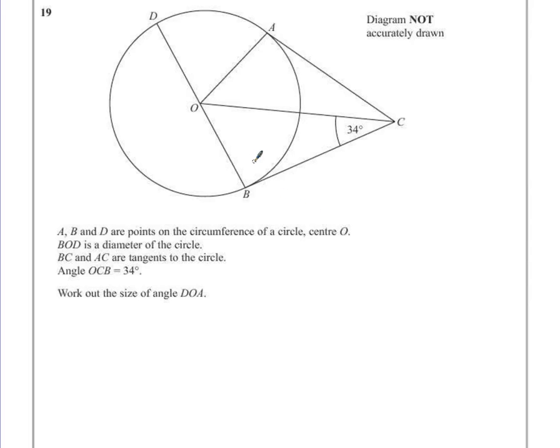The first theorem is the fact that we know that BC is a tangent to the circle, and what that means is that the angle here created, OBC, is 90 degrees. We also know then that this should also be 90 degrees.